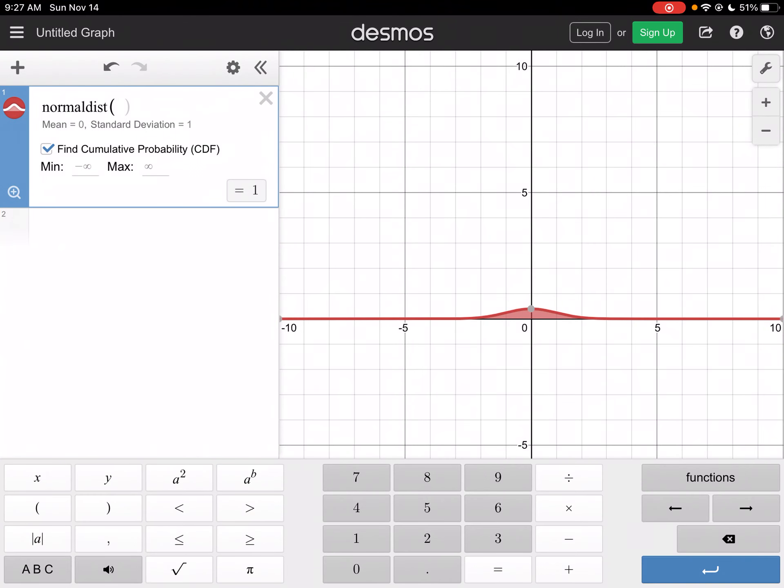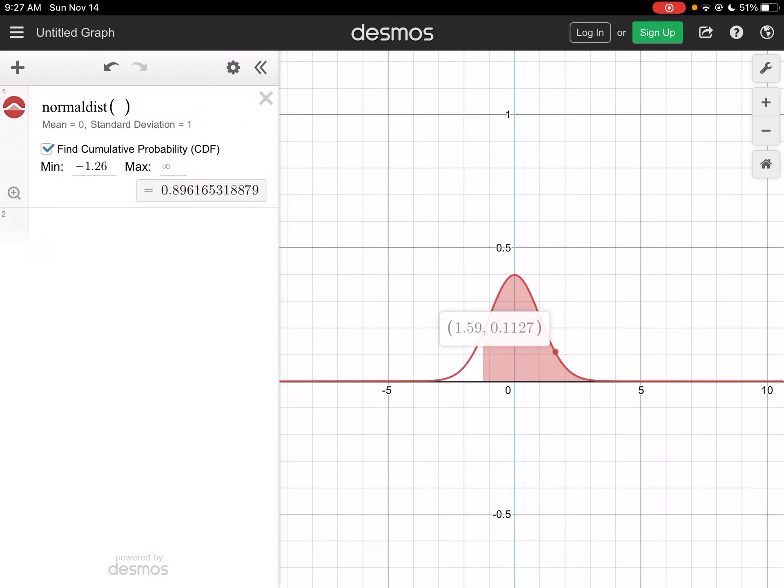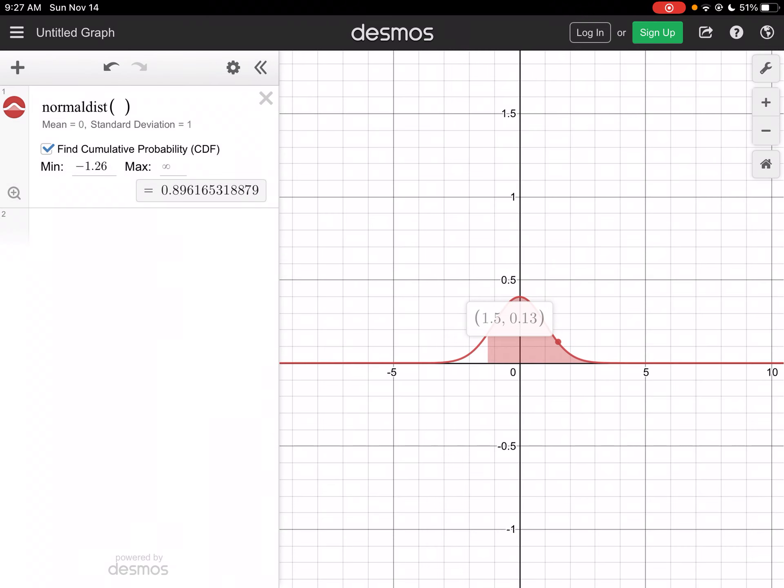So I'm going to have my minimum be negative 1.26, and my maximum is infinity. And so I get about 0.89. You can see if I blow up my curve here so you can see a little bit better, from 0 to 1. I get the same answer I did with my table.